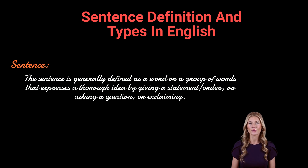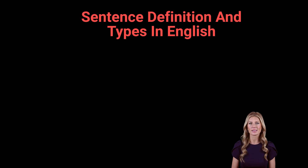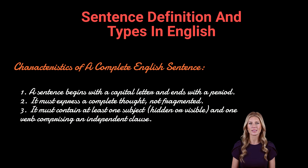A sentence is a group of words, usually containing a verb, that expresses a thought in the form of a statement, question, instruction, or exclamation and starts with a capital letter when written. A complete English sentence must have three characteristics: first, in written form, a sentence begins with a capital letter and ends with a period, a note of interrogation, or a note of exclamation. Second, it must express a complete thought, not fragmented. Third, it must contain at least one subject — hidden or visible — and one verb comprising an independent clause. An independent clause contains an independent subject and verb and expresses a complete thought.